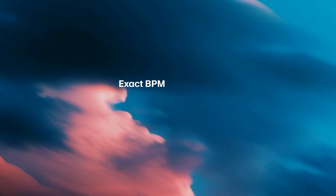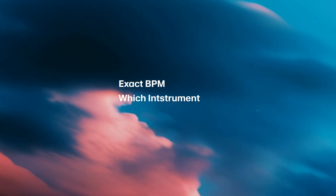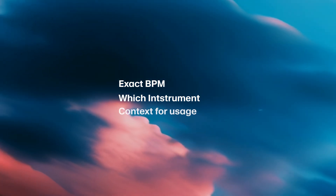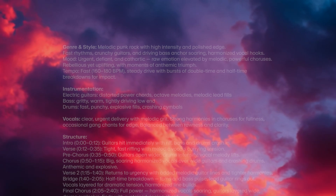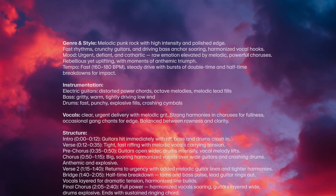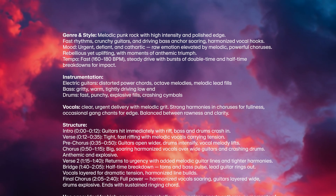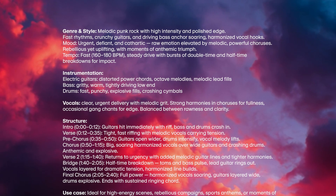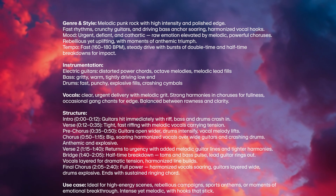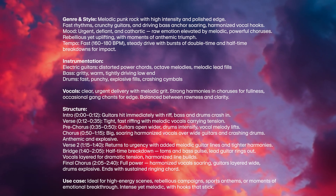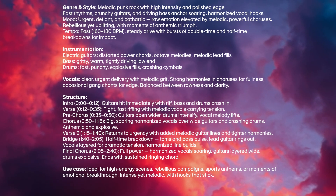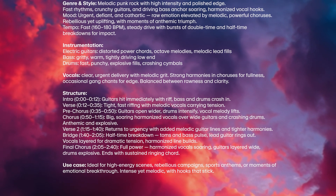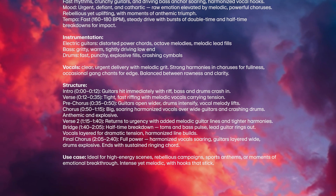You can give the exact BPM, the exact instruments that you want, and also provide as much context as to what the music is for. If we take a look at this prompt you can see we're providing a bunch of context to the AI: we're giving the instruments we want, the emotion we want to convey, the context of what we're going to use the music for, the BPM, and much more.